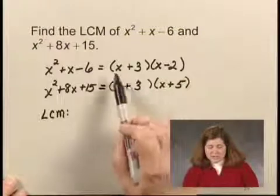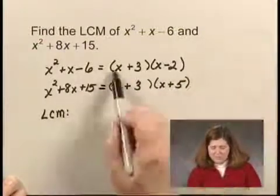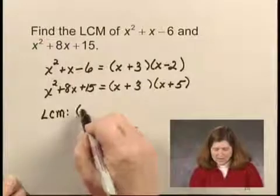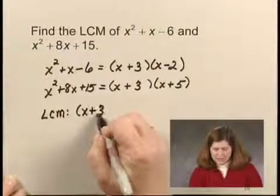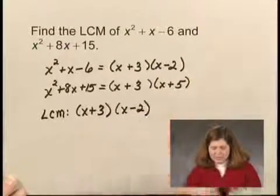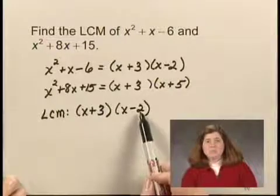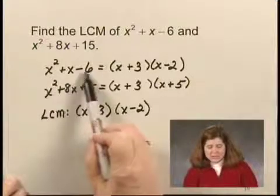We write the different factors. We can think of it this way as writing the factors of x squared plus x minus 6. Writing those two will make the least common multiple a multiple of x squared plus x minus 6.